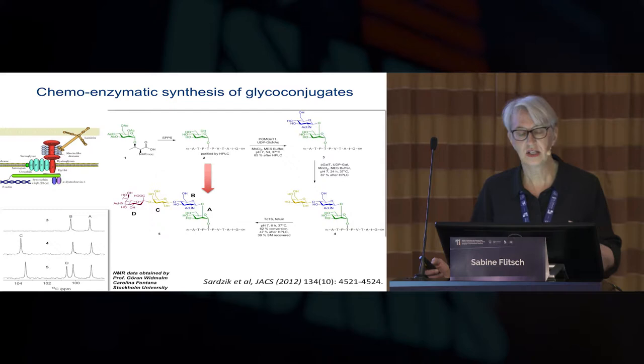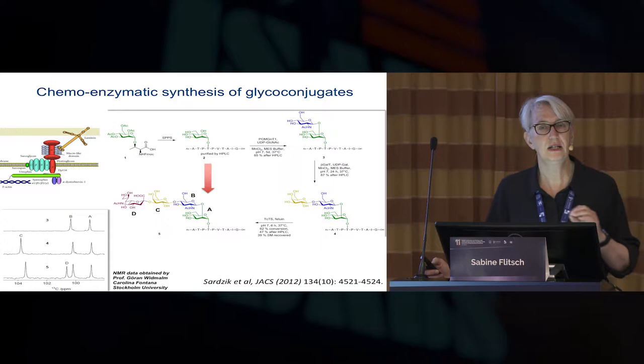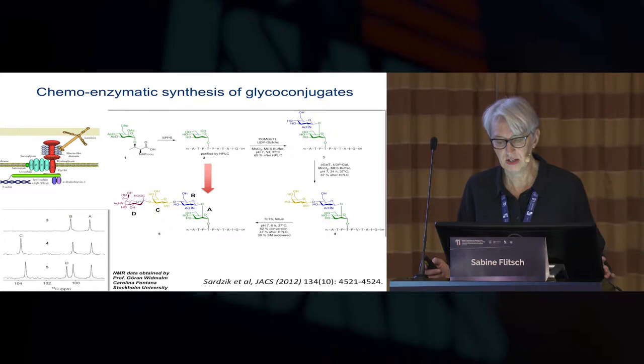What we've done here is borrowed similar homologs from other pathways that were easier to access, and yet the whole system still with exquisite selectivity assembles these target sequences. We confirmed that by very rigorous NMR analysis, collaborating with Goerl-Wittmann in Stockholm. You can see in the anomeric region that without minimal purification you can generate your target sequence with high selectivity. If you compare that with chemistry — and we are also chemists — this is extremely difficult to achieve with chemical methods.